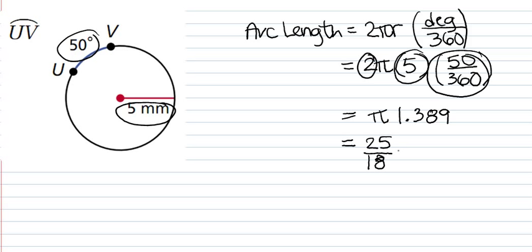Okay, and conventionally, we write the pi after the number. Technically, in terms of math, it doesn't make any difference, but it just looks better to write it like this. Okay, so this would be your answer, or you could write it as a fraction, either way.